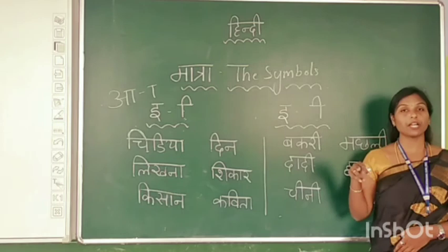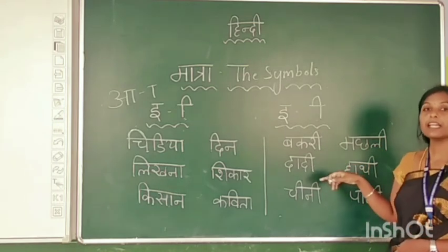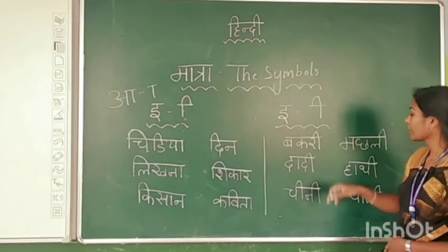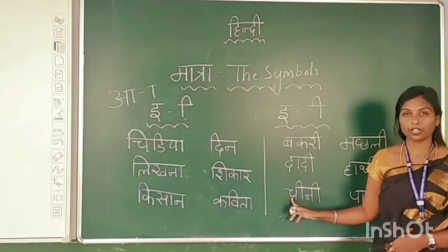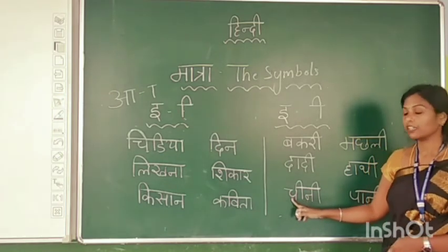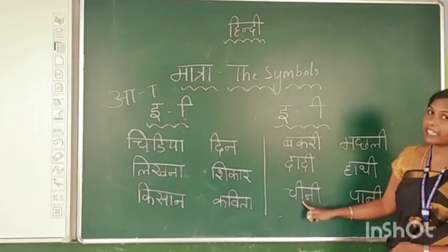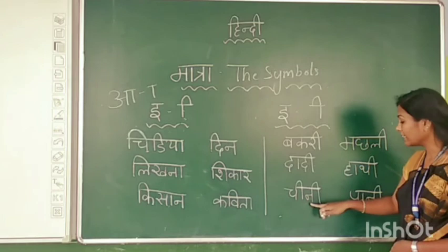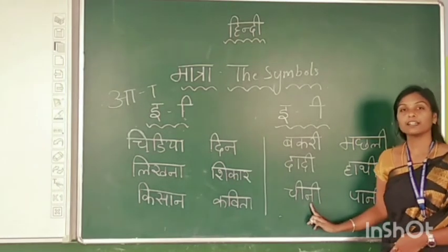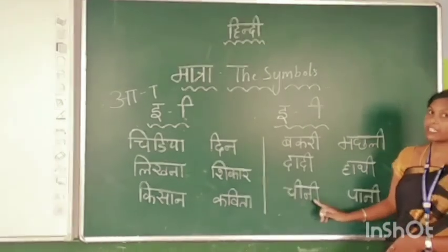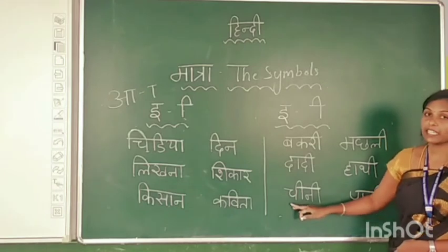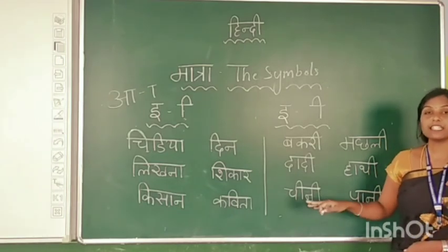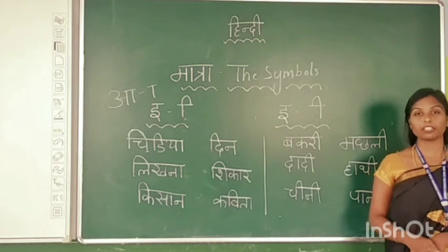Dadi ka matlab kya hai? Grandmother. You already learned this — Dadi means grandmother. And next: Cha — Cha plus EE gives Chi. The next letter is Na — Na plus EE gives Ni. Chi + Ni = Chini. Chini ka matlab hai? Sugar. Chini means sugar.